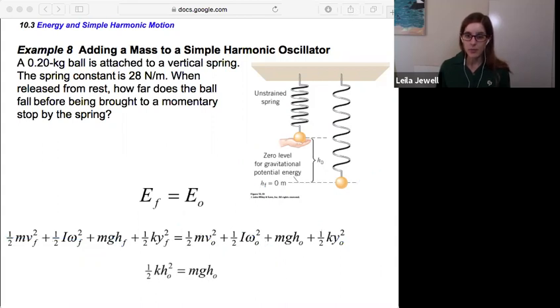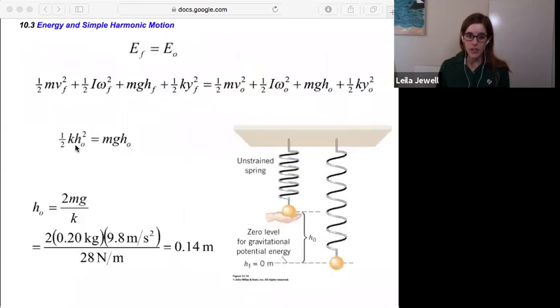So to finally wrap up this problem, we can take that relationship one half k h₀ squared is equal to mg h₀. We want to solve for h₀. We will divide by k and multiply by two and divide one of these h₀'s out so that we're left with that the initial height is 2 times m times g divided by k. And that comes out to an initial height of 0.14 meters or 14 centimeters. So there's a nice demonstration of how we can once again use our conservation of mechanical energy and look at all the kinetic energies, all the potential energies, and figure out which energies we have at which points and be able to solve a problem like this.